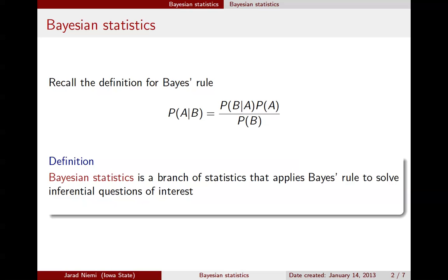The primary purpose of today's mini-lecture is to talk about Bayesian statistics. I'm going to define Bayesian statistics as a branch of statistics that applies Bayes' rule to solve inferential questions of interest, where A represents unknowns and B represents the data.